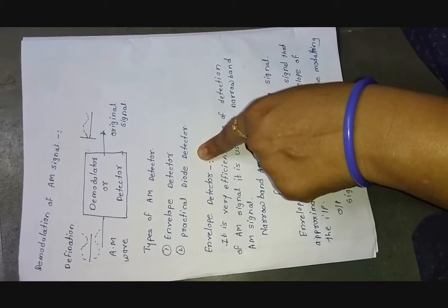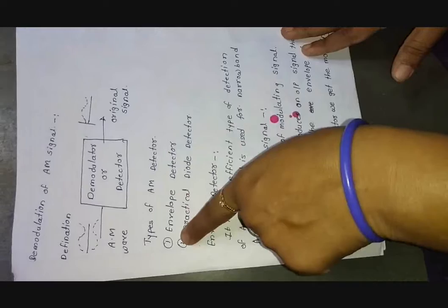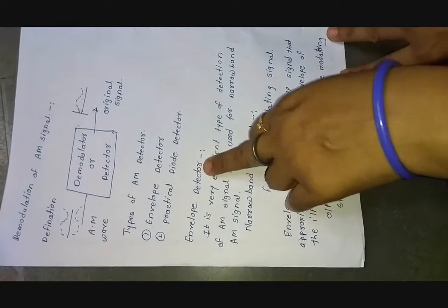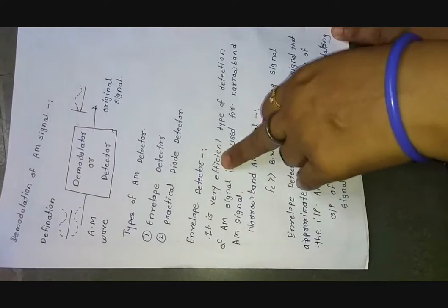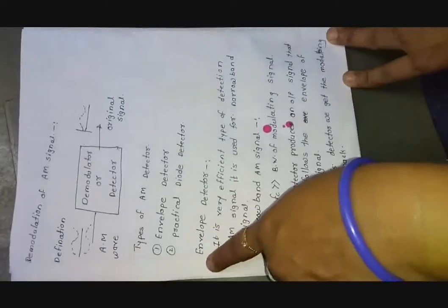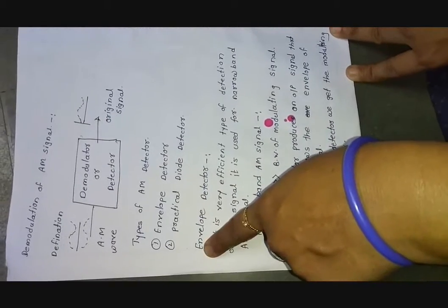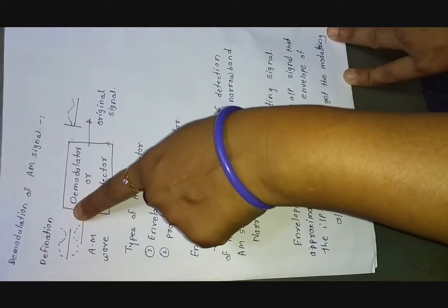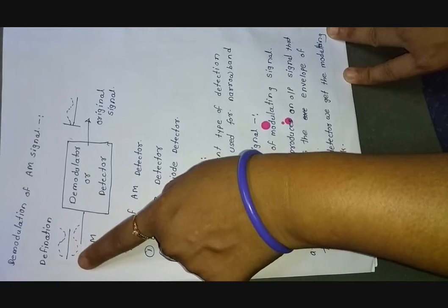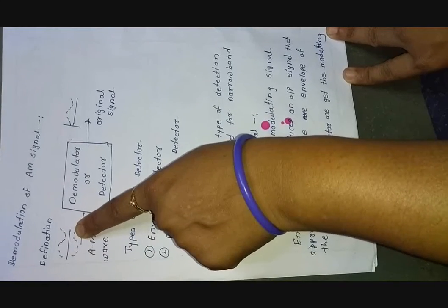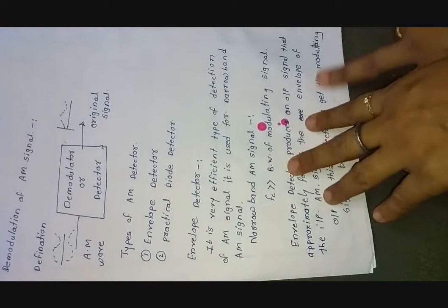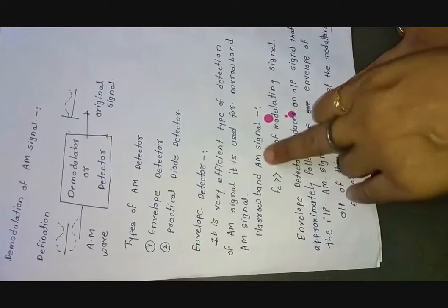These are the two types of AM detector. Today we are going to study the envelope detector first. The word 'envelope' is used because the carrier signal is superimposed on the modulating signal in an envelope-like shape. That AM wave is called an envelope-like shape, and the envelope detector is associated with the narrowband AM signal.